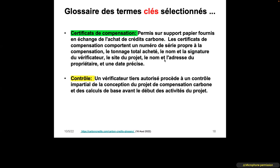The compensation certificate is a document provided in exchange for the purchase of a carbon credit. These certificates contain a proper number, the total purchase, the name and signature of the verifier, the project site, the name and address of the owner, and the date of issuance. In addition to MRV, an audit (contrôle) is carried out by an authorized third-party verifier who proceeds to an impartial review of the carbon project concept and calculations of the baseline before the beginning of the project.